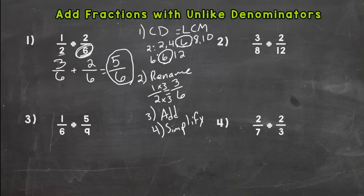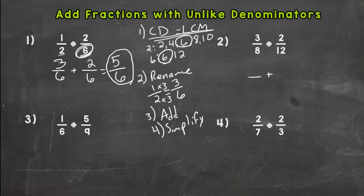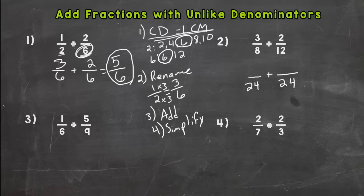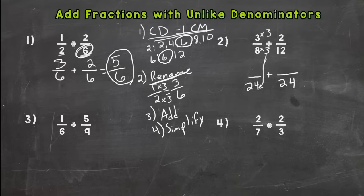Next problem: three-eighths plus two-twelfths. Step one — do we have a common denominator? No, eight and twelve are not the same, so we need to find a common denominator first. List out the multiples for eight and twelve to see where they meet. Eight and twelve are going to meet first at 24, so 24 is our common denominator. Step two: rename. Eight times three gives us 24, so we do that to the top — three times three is nine. We get nine twenty-fourths.